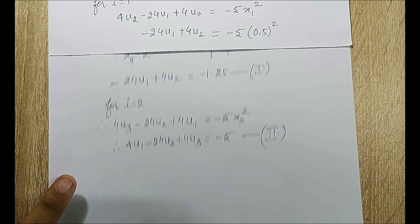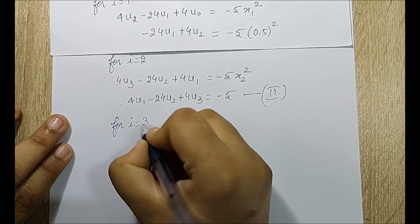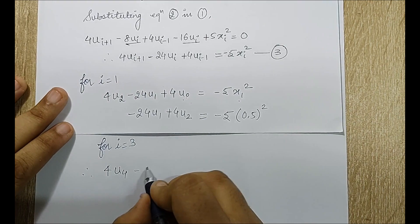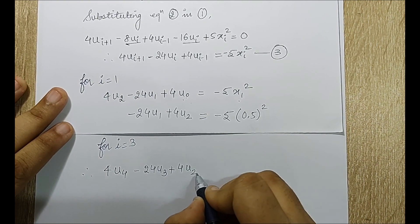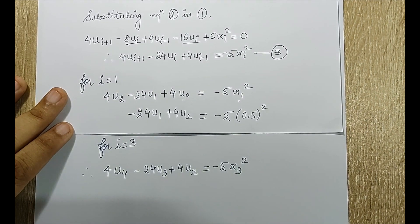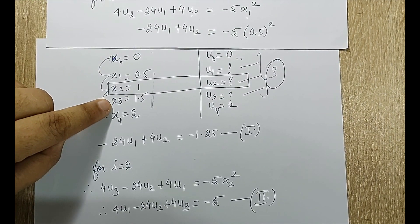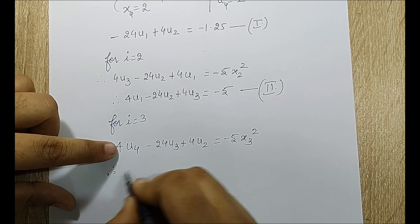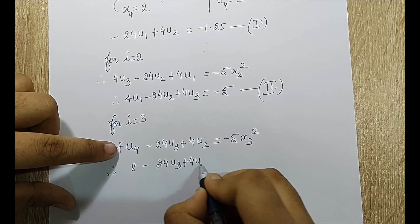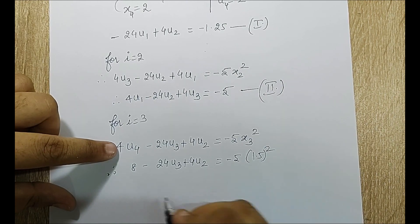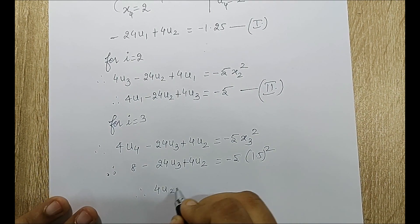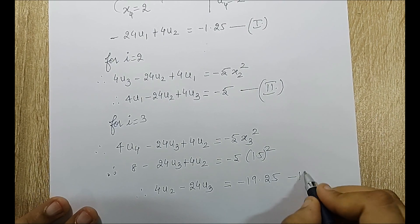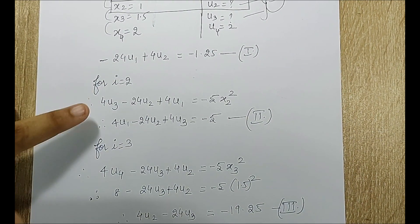For i = 3: substituting gives 4u₄ − 24u₃ + 4u₂ = −5·x₃². From the table x₃ = 1.5 and u₄ = 2, so 8 − 24u₃ + 4u₂ = −5·(1.5)². This simplifies to 4u₂ − 24u₃ = −19.25, marked as equation 3 (system).